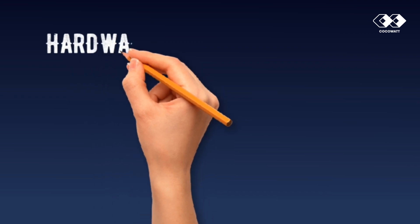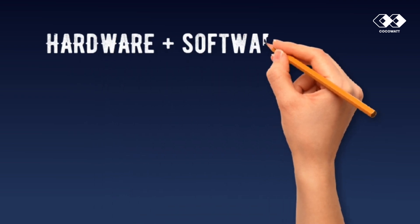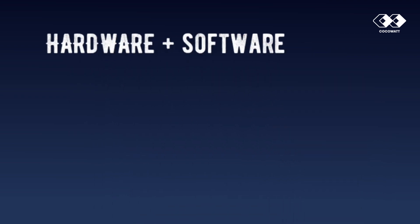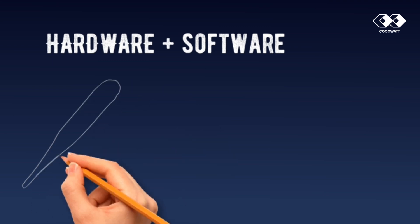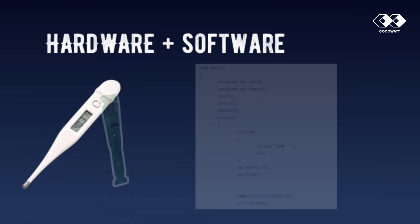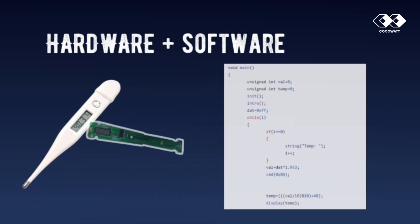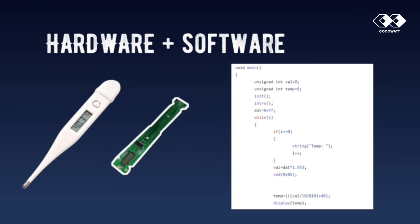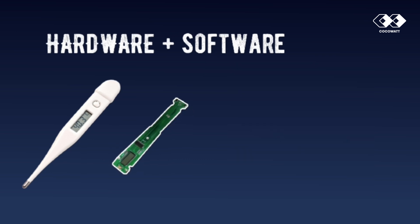Embedded system is a combination of hardware and software designed for a specific function. For example, a thermometer is an embedded system. It has hardware and software embedded for a specific function — that is, temperature measurement and displaying it on an LCD.